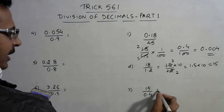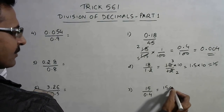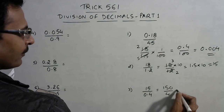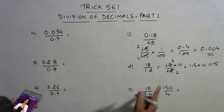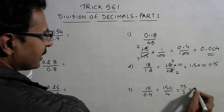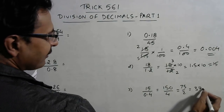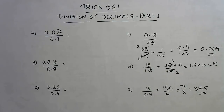Likewise, here we have a decimal in the denominator. The problem becomes 15 over 0.4, which is 150/4. To divide by 4, take half of 75/2, which gives 37.5 as the answer. You can see we are taking very few steps to solve these questions.